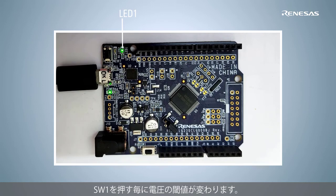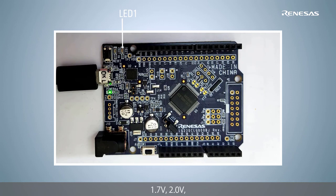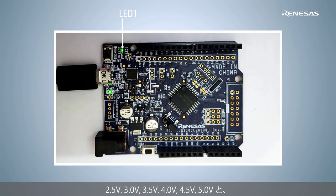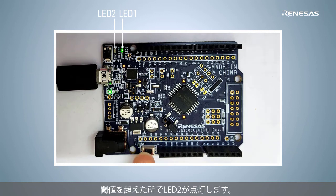Press switch one to change the threshold value. The threshold value changes from 1.7V to 2V, 2.5V, 3V, 3.5V, 4V, 4.5V, and 5V each time switch one is pressed. If the threshold is exceeded, LED two lights up.